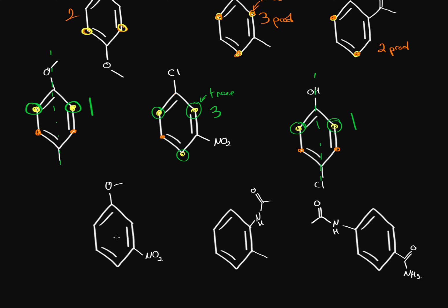On this fourth molecule, we have an ether that ortho and para directs to these positions, and a nitrate which meta-directs to this one position only. Again, ortho and para directors are more highly prioritized, and they're also activating. So we'll have up to three different products, with trace amounts for the position squeezed between groups.